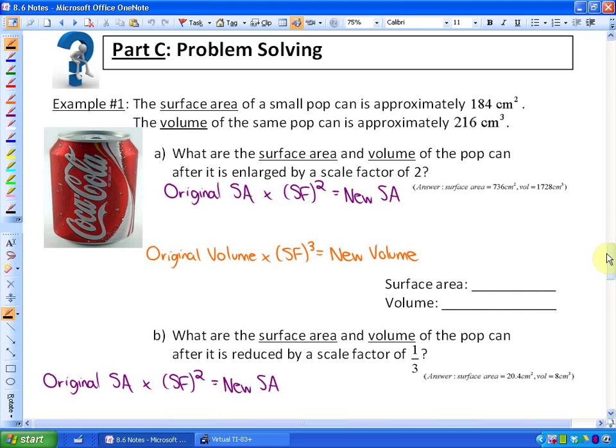This example says, the surface area of a small pop can is approximately 184 cm squared. The volume of the same pop can is approximately 216 cm cubed. What are the surface area and volume of the pop can after it is enlarged by a scale factor of 2? So when the measurements are enlarged by a scale factor of 2,